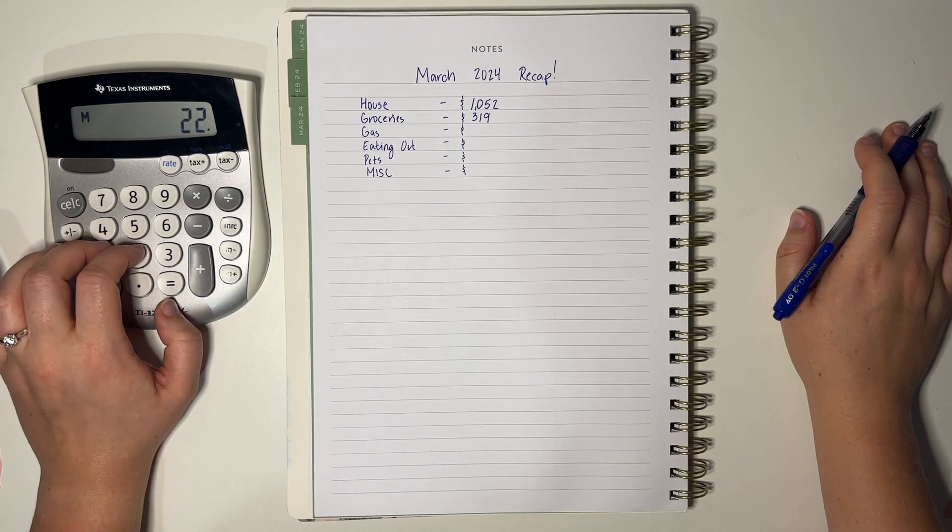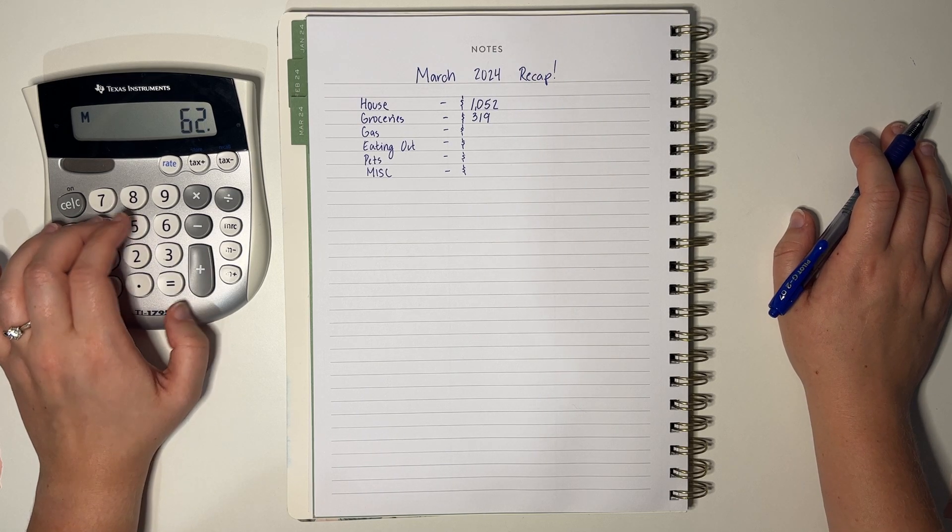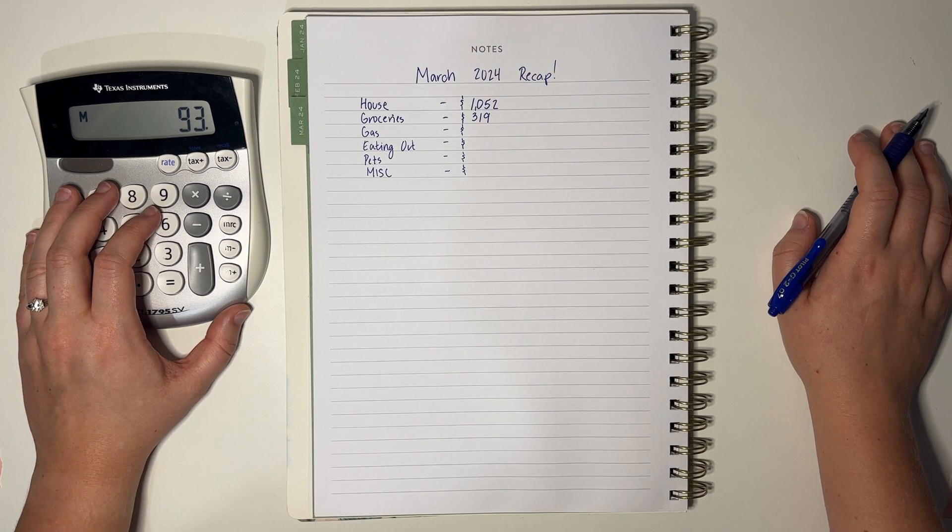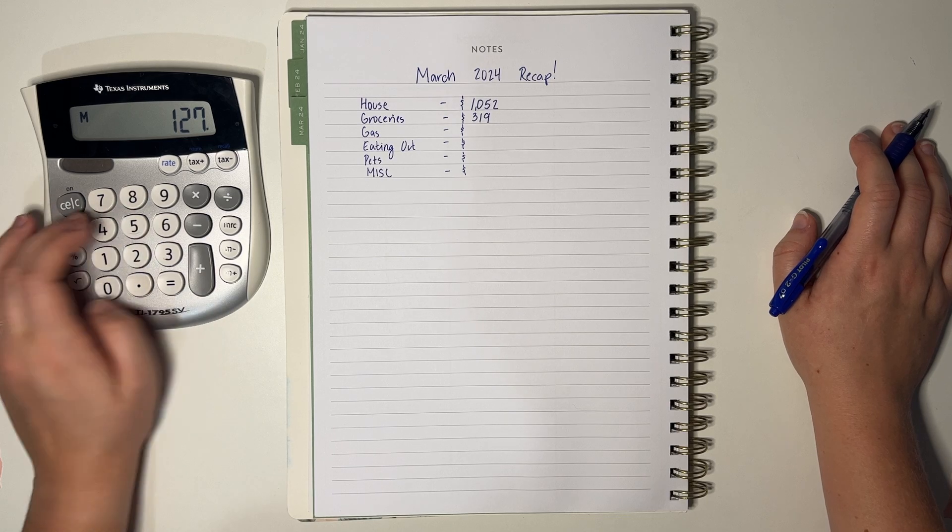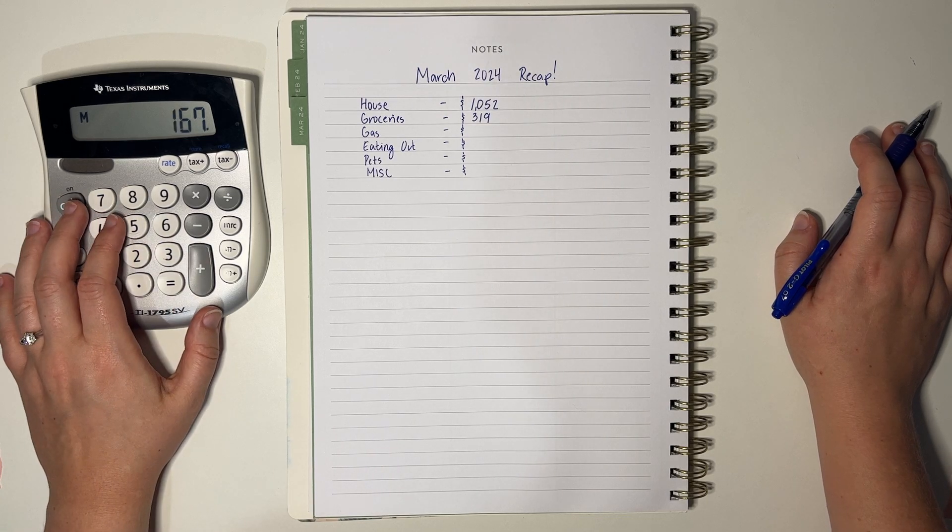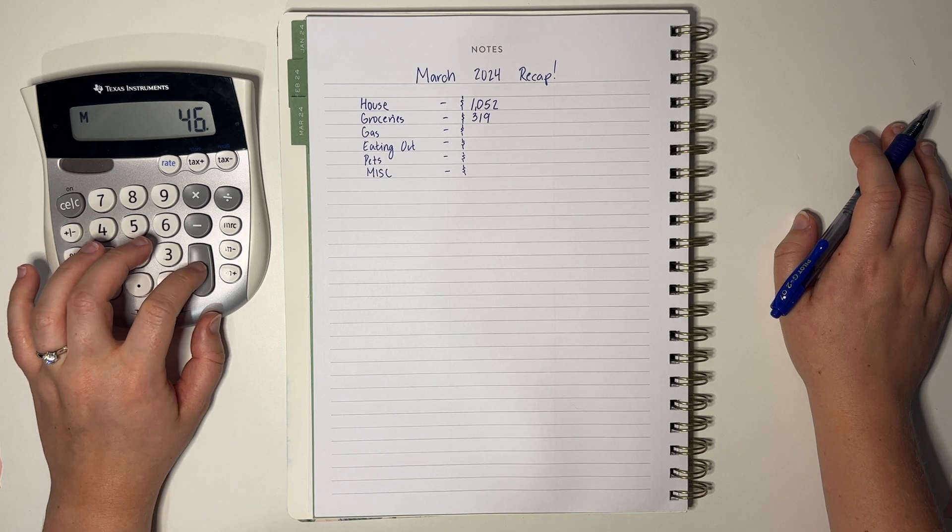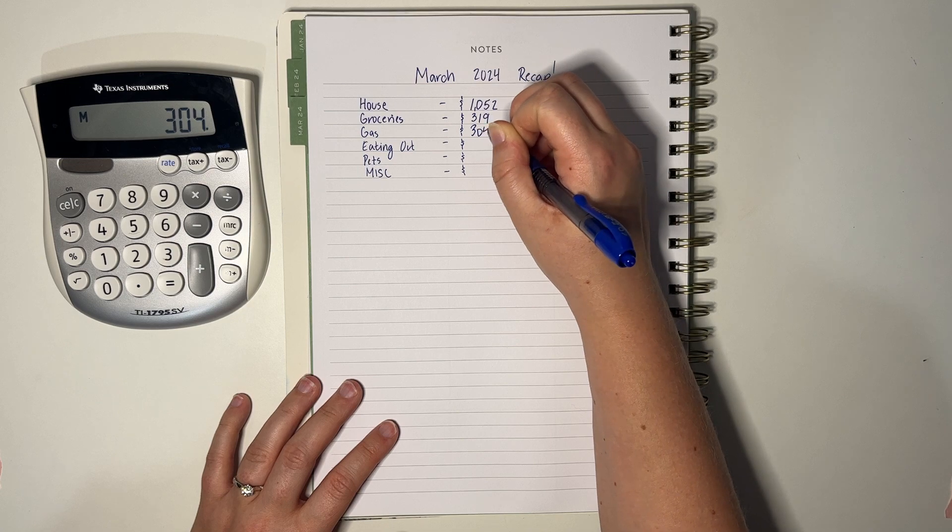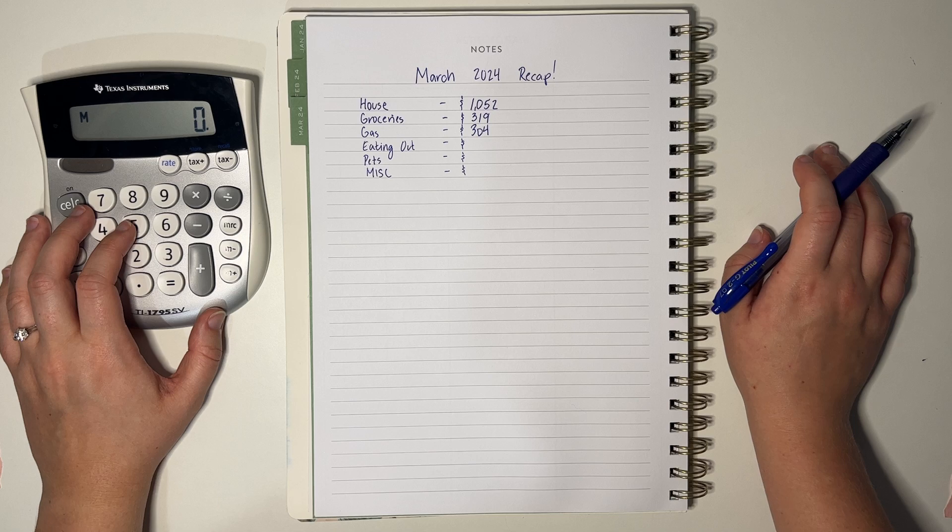Like I said, gas is going to be more because we did take quite the trip out to Mississippi, which is about another eight hour drive. It looks like we make one every month nowadays, but it is what it is. 40, 45 and 46 and another 46. 304. So that is also about $100 over budget.